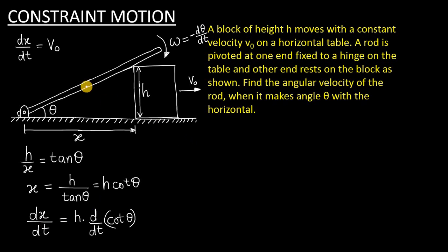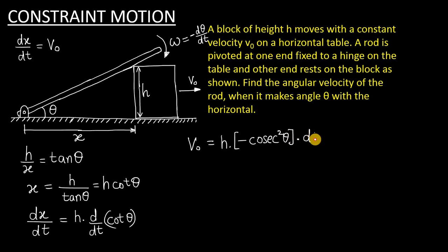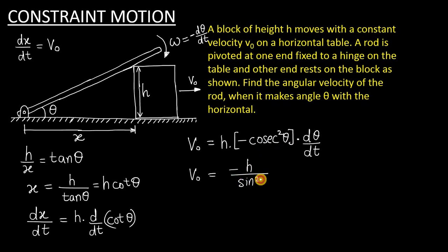The left-hand side dx/dt is velocity v0, and h is a constant. The derivative of cot theta is minus cosec squared theta. Because we are differentiating using the chain rule — cot theta is a function of theta but we differentiate with respect to t — we multiply by dθ/dt. Substituting, cosec squared theta becomes 1/sin squared theta in the denominator, and dθ/dt is minus omega, so minus times minus gives plus. Therefore, the angular velocity omega equals v0 divided by h, multiplied by sin squared theta.